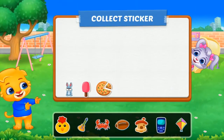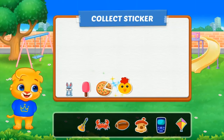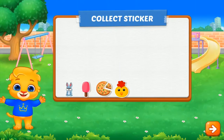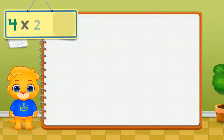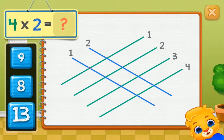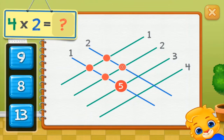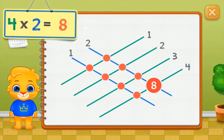Pick a sticker! 1, 2, 3, 4, 5, 6, 7, 8. 4 times 2 equals 8.